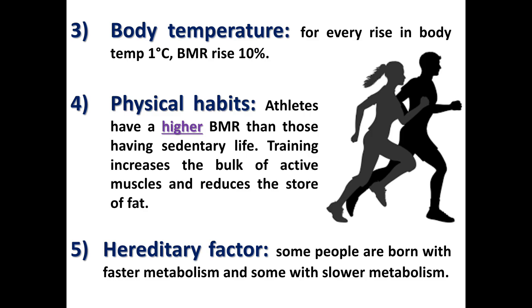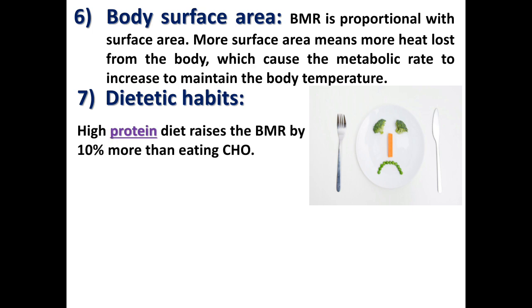Temperature: for each rise of body temperature of 1 degree centigrade, BMR rises 10%. Physical habits: athletes have a higher BMR than those with sedentary life; training increases the bulk of active muscle and reduces fat stores. Dietary factors: some people are born with faster metabolism and others with slower metabolism. Body surface area: BMR is proportional to surface area — more surface area means more heat loss from the body, which causes metabolic rate to increase to maintain body temperature.